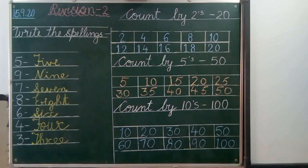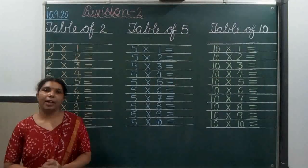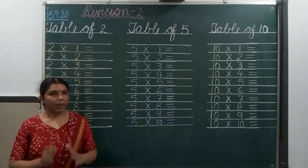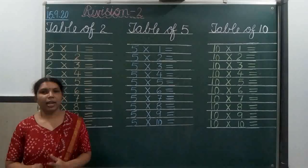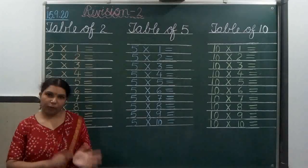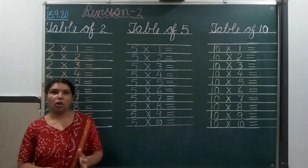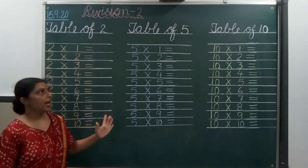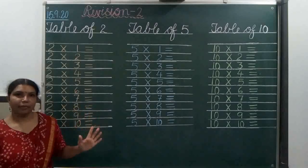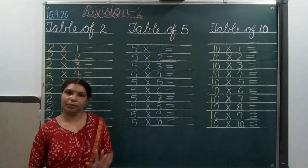And last is table of 2, 5, 10. Now we have studied spellings 1 to 10 and count by 2 to 20, 5 to 50 and 10 to 100. Now on the 3rd page we have to revise, we have to write table of 2, table of 5 and table of 10.